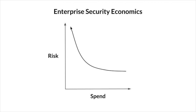Risk here represents digital risk to an enterprise's core mission, and spend represents all CapEx and OpEx costs for security. The problem is unsolvable, which in this framework means that risk can never be zero, and there is some practical asymptote here.